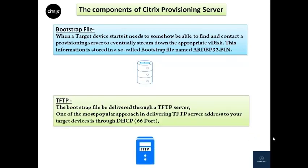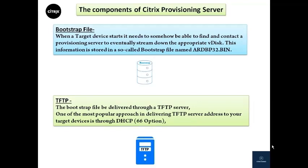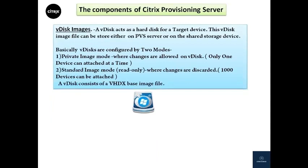The fourth component is the TFTP server. The bootstrap file is delivered through a TFTP server, which can reside on the PVS server or on a dedicated server. One of the most popular approaches to delivering the TFTP server address to target devices is through a DHCP server using option 66.